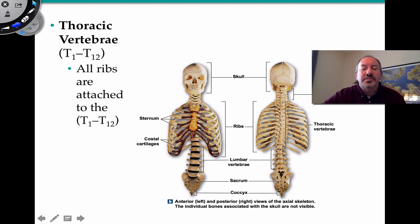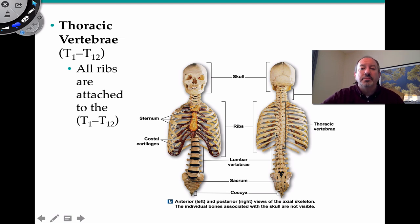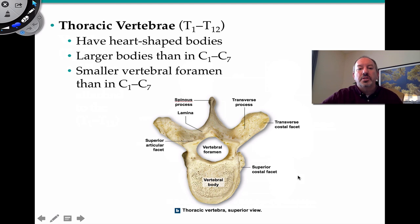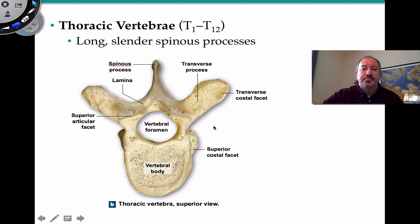Thoracic vertebrae go from T1 down to T12. Their key characteristic is that they articulate with each of the ribs. They have large, heart-shaped bodies that are very supportive. The vertebral foramen is smaller than in the cervical vertebrae. The spinous processes of thoracic vertebrae are long and slender — a distinctive characteristic.